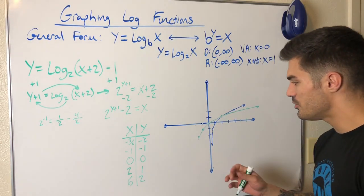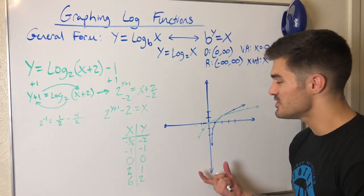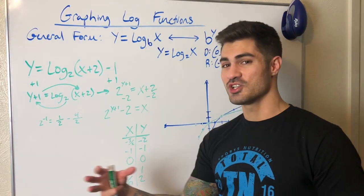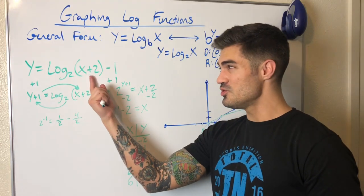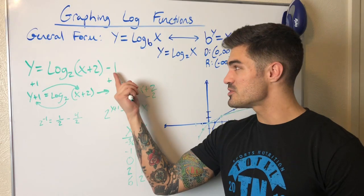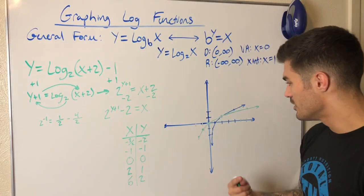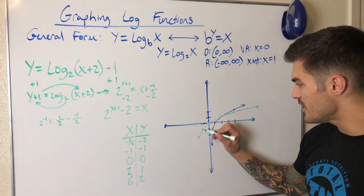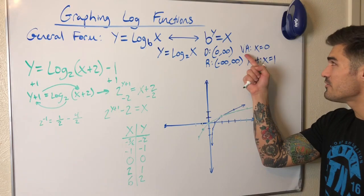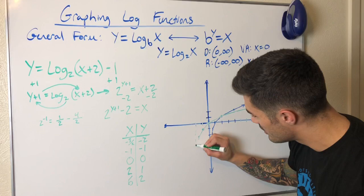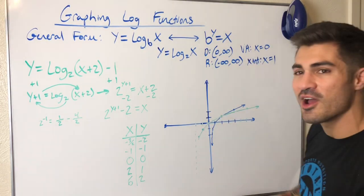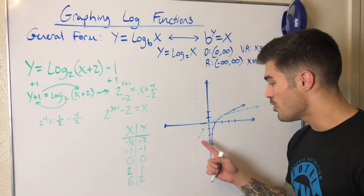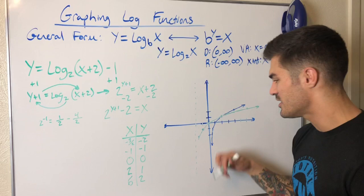Knowing about transformations is helpful here because it tells me exactly where my asymptote is. Two is being added directly to x, so the graph shifts left two units. And subtracting one on the outside shifts it down one. So starting from the parent function's reference point and going left two, down one gives me the shifted point. My vertical asymptote is now at x equals negative two instead of x equals zero.